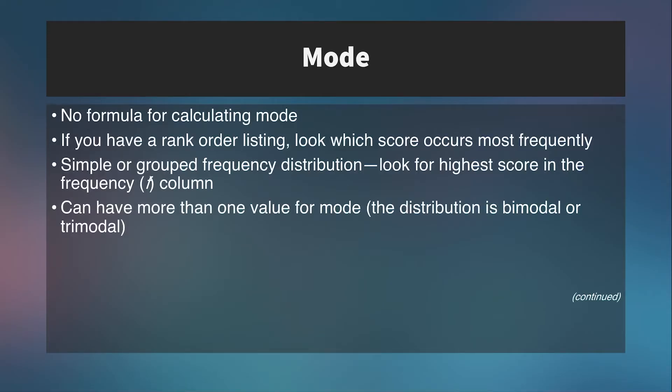A little more detail on each of these. There's no real formula for calculating the mode. If you have a rank order listing, you can look at which score occurs most frequently — this is manageable with 20 or fewer scores, but many more than that and it becomes cumbersome. In a simple or grouped frequency distribution, you just look for the highest value in the frequency column. It's important to know there can be more than one value for the mode — a distribution can be bimodal or trimodal. Even if two peaks aren't exactly tied, you'd still call it bimodal.